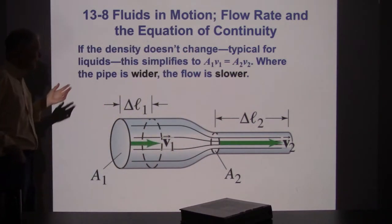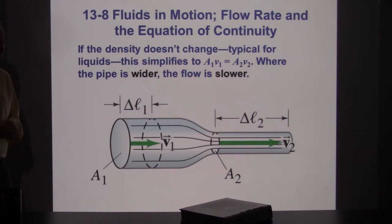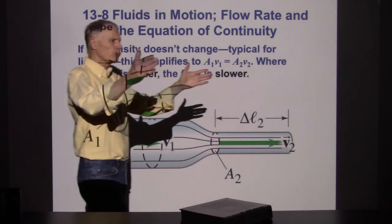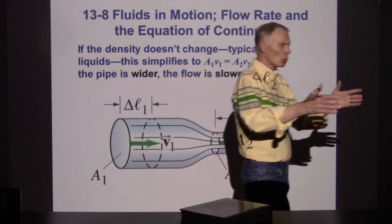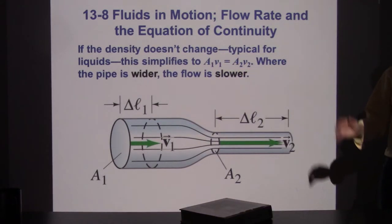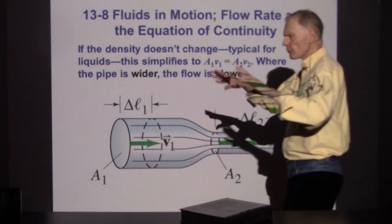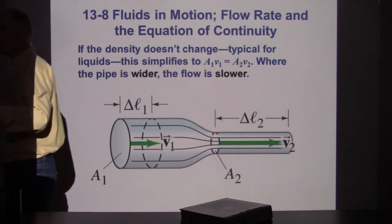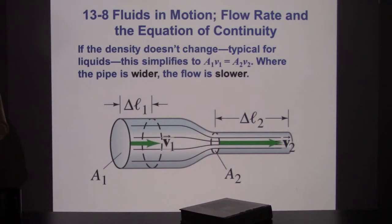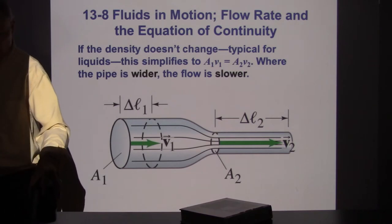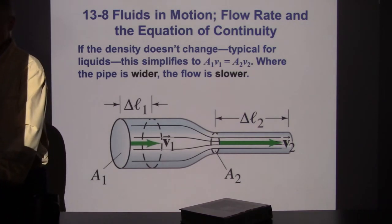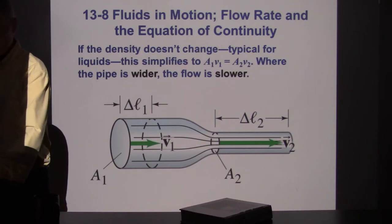I always think of this as being out in traffic. When the freeway drops from four lanes down to two, everybody just has to go faster. We go along with four lanes and then down to two lanes — we just have to drive twice as fast to get through. That's what these formulas are suggesting. Don't really do that.